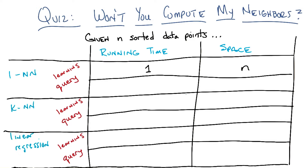Let me make sure I understand what's going on here. We're looking at three different algorithms that are learning algorithms — one nearest neighbor, k nearest neighbor, and linear regression. And for each one, you want to know running time and space.